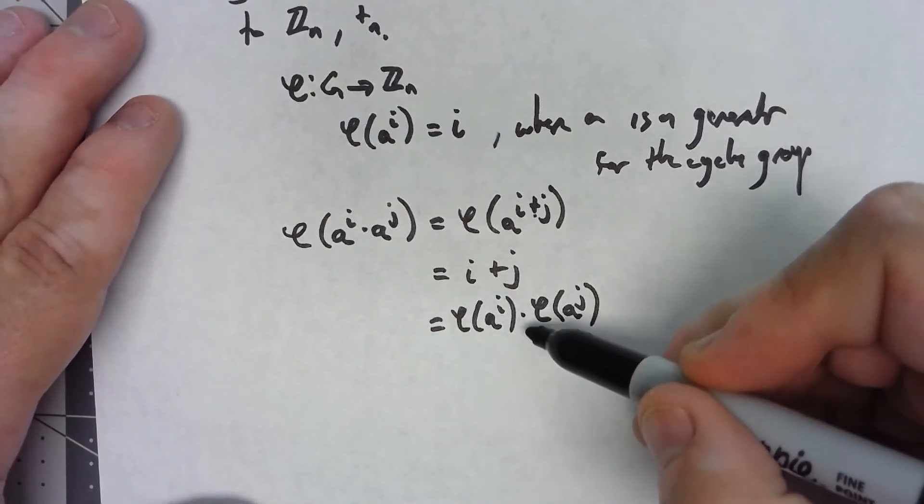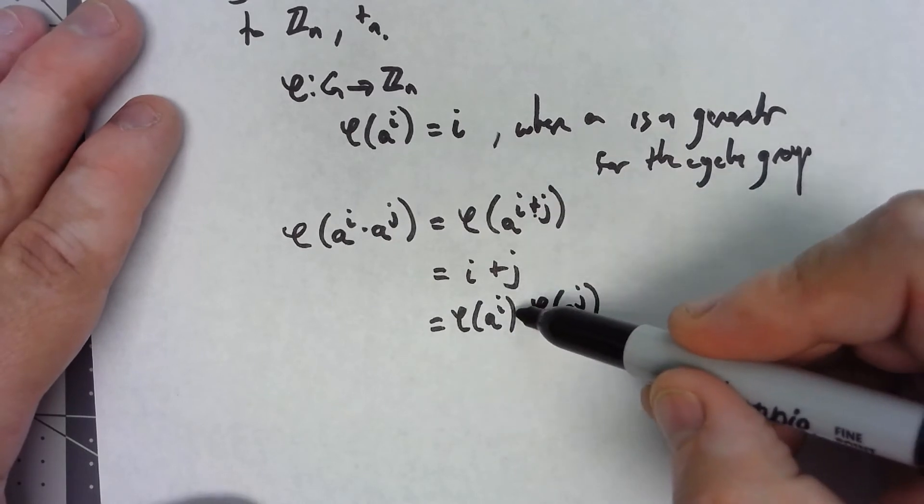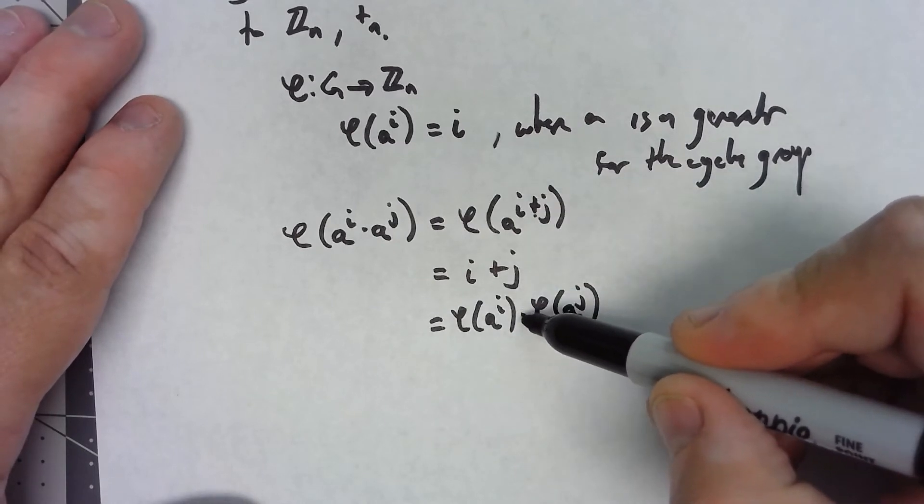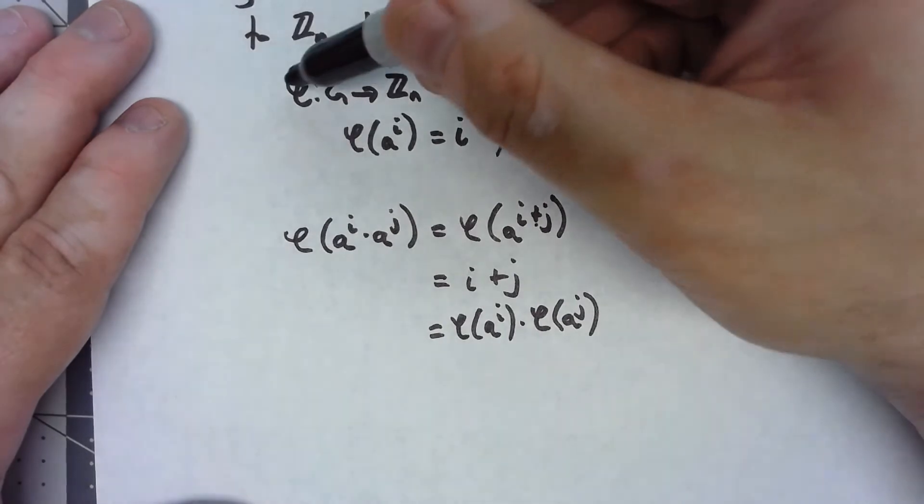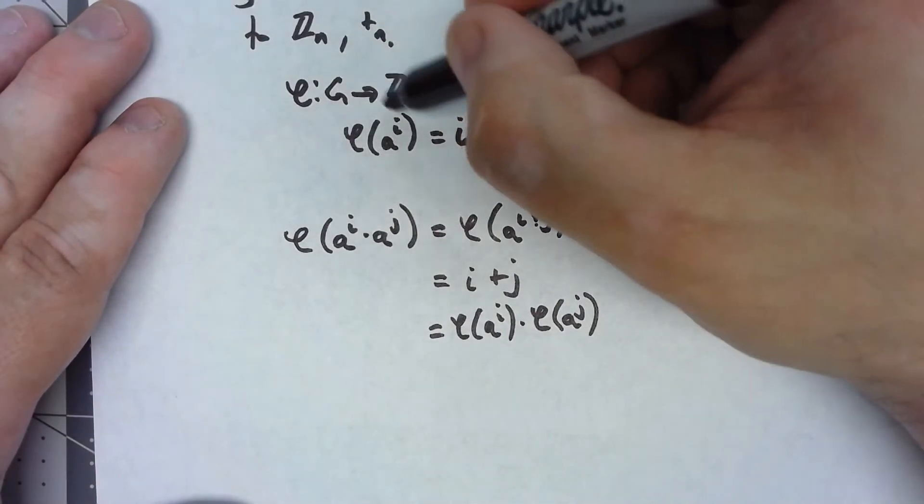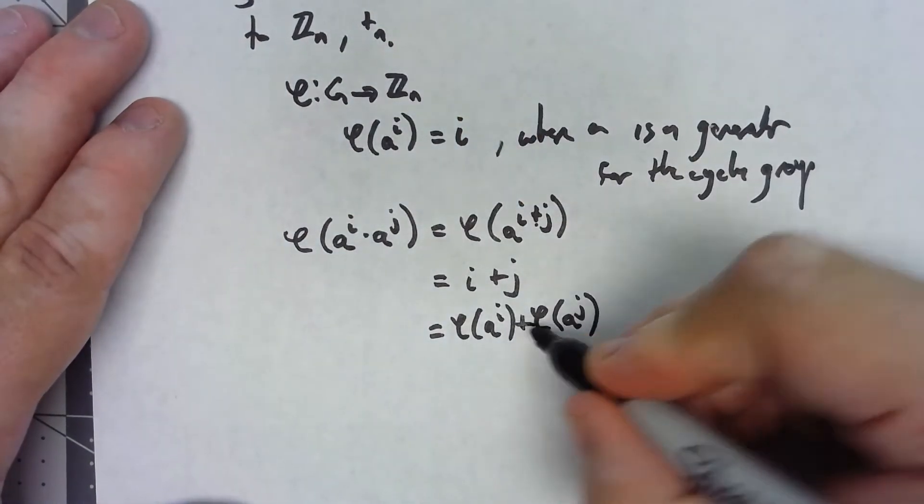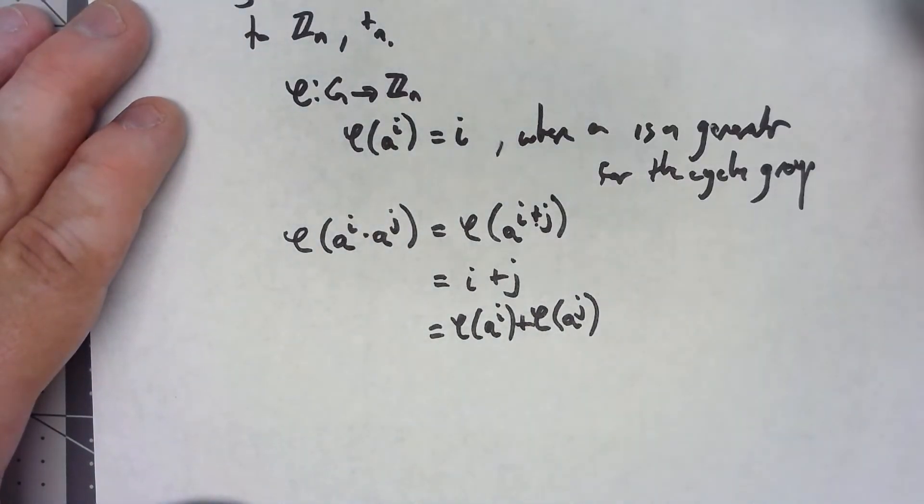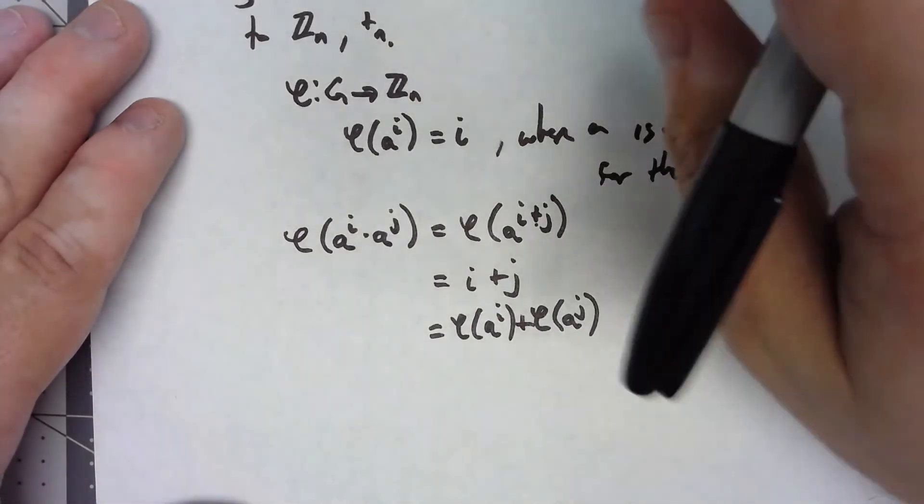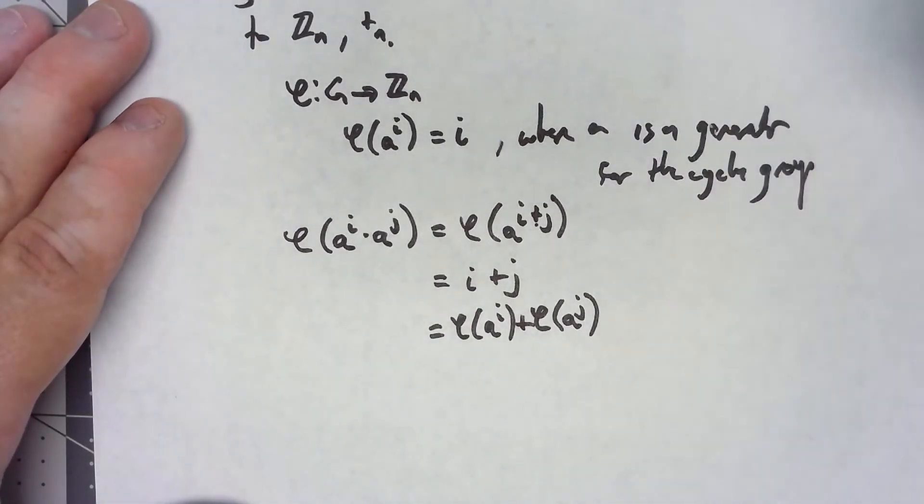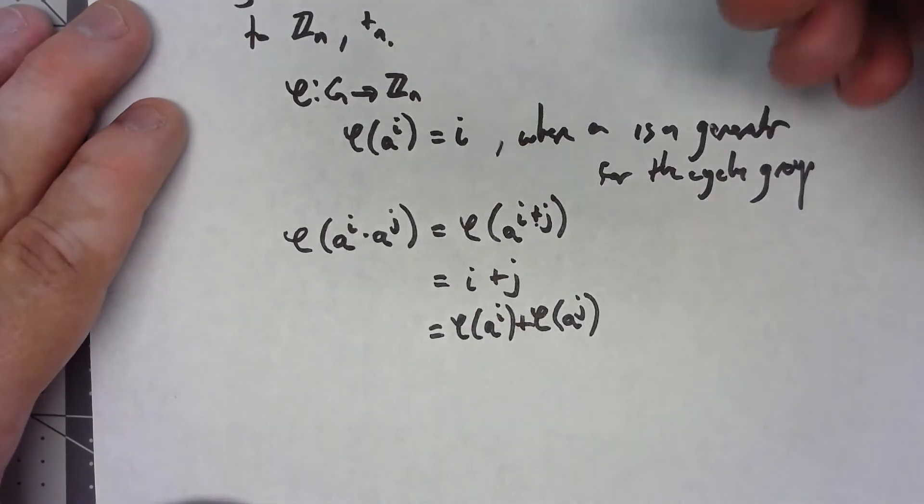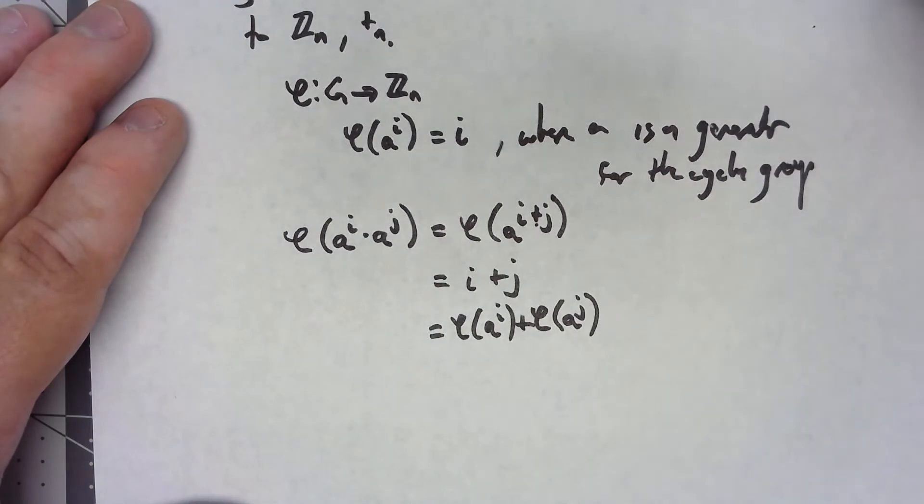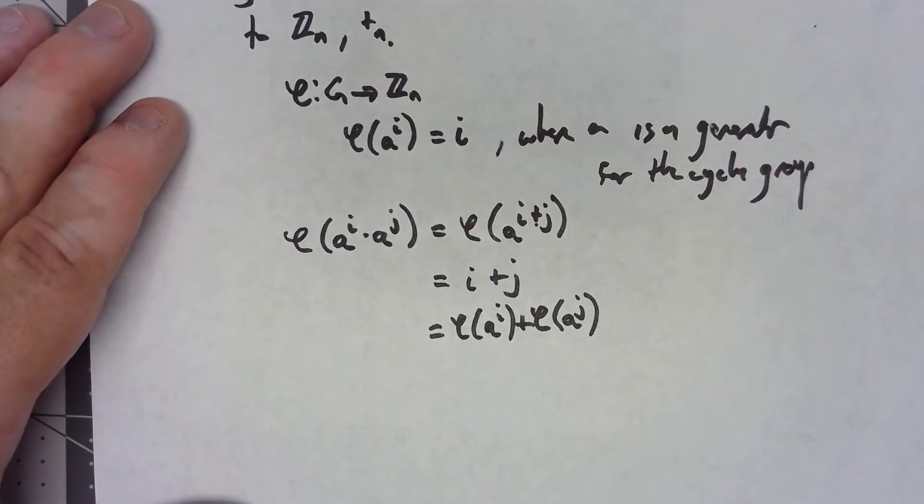Now, I use the times for the generic thing, but remember that is the operation after we've done the isomorphism. That's the operation for Zn. I could just as easily have written it as plus because we know the operation for Zn is plus. This is really handy because any cyclic group with n elements is isomorphic to any other cyclic group with n elements.